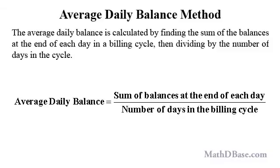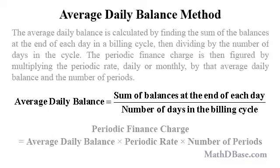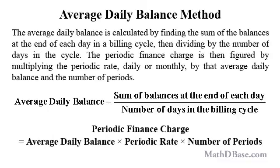The average daily balance is calculated by finding the sum of the balances at the end of each day in a billing cycle, then dividing by the number of days in the cycle. The periodic finance charge is then figured by multiplying the periodic rate — daily or monthly — by that average daily balance and the number of periods.